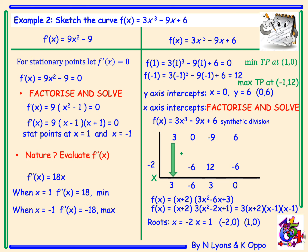Now that we've established our stationary points, the next step is to look at our x and y intercepts. Starting with the y-intercept, the function has a constant of 6 at the end. Therefore when x = 0, y = 6, so our y-intercept is (0, 6).